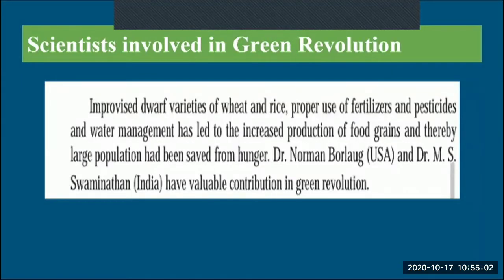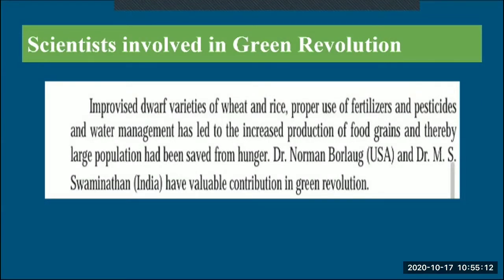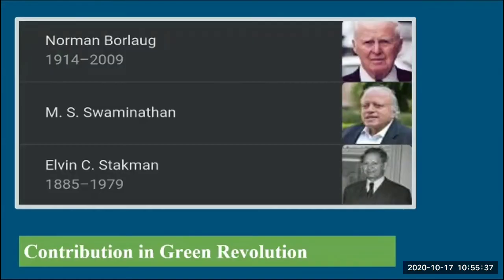Scientists who contributed to the Green Revolution developed improved dwarf varieties of wheat and rice. Proper use of fertilizers, pesticides, and water management led to increased food grain production, saving a large population from hunger. Dr. Norman Borlaug from the USA, Dr. M.S. Swaminathan from India, and Elvin C. Stackman are among the key contributors.